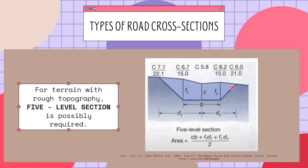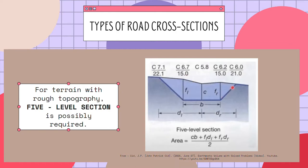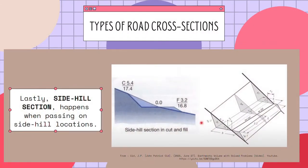The photo presented is an example of a cut section. To get the area of this section, it is divided into four parts. Lastly, there is the side hill section, which occurs when passing on side hill locations. This type of terrain is on the side of a hill where one side is like a cliff edge and is possibly prone to erosion or landslides. This image has a combination of both, meaning it has a cut and fill section.